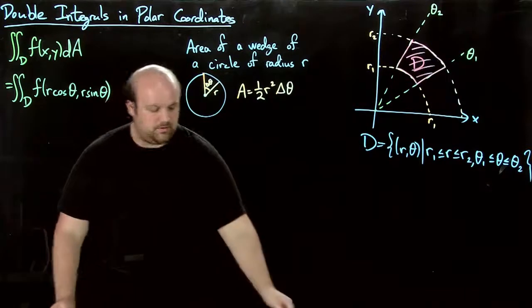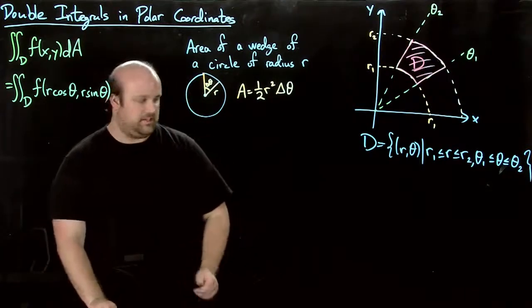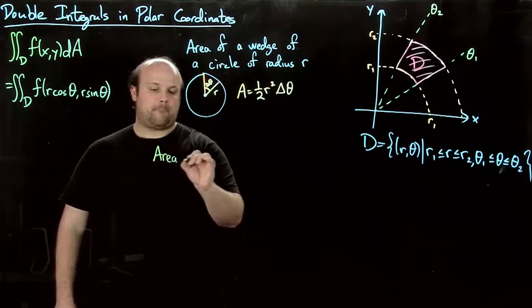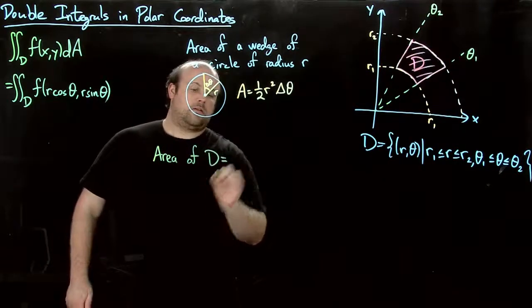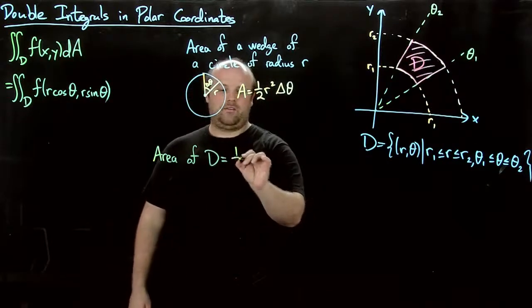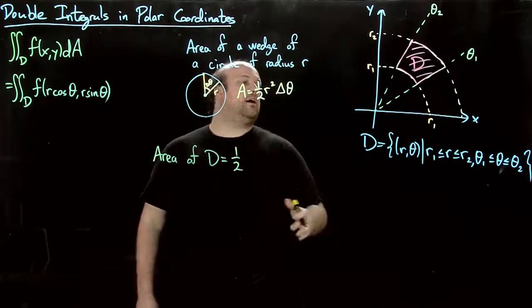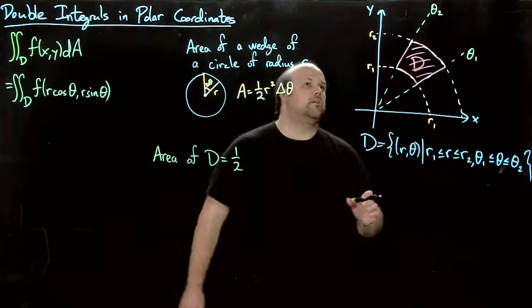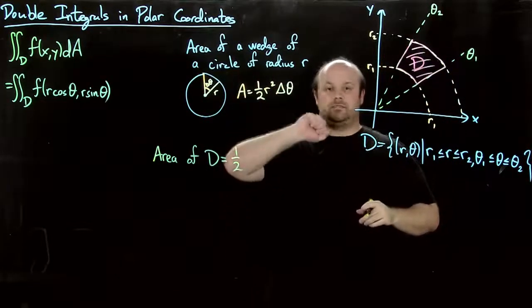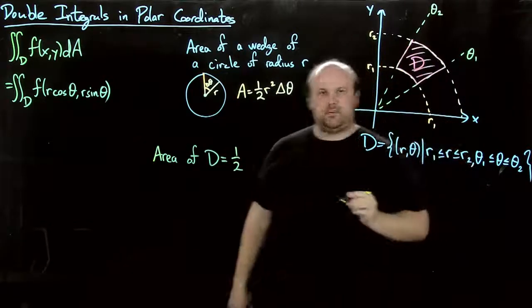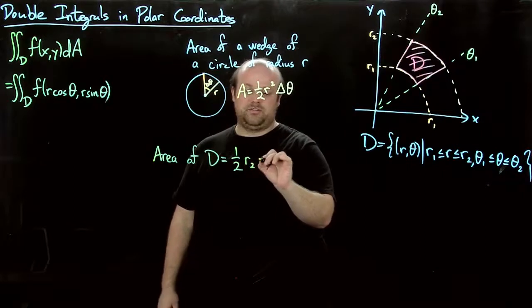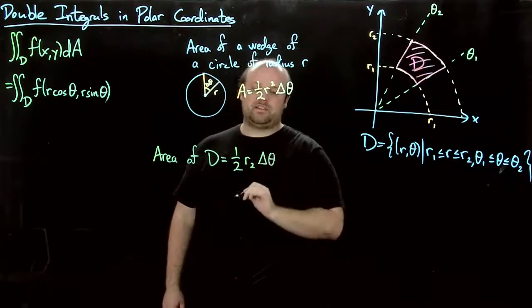So let's get a new color here. Area of d. Well, it's going to be one-half, but now we have to see, we can see this as sort of the difference of the areas of two of these wedges, the big one minus the small one.